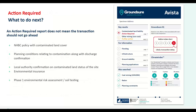What happens if a report comes back and says action required? There is no need to panic. A lot of the time when we find a risk or potential risk, that doesn't mean the land is contaminated — it generally means we need more information. There are various standard ways to try and get the risk downgraded. If it's a new build or a property built within the last 10 years, the NHBC certificate with contaminated land cover will help us downgrade the risk. That's one of the easiest ways.